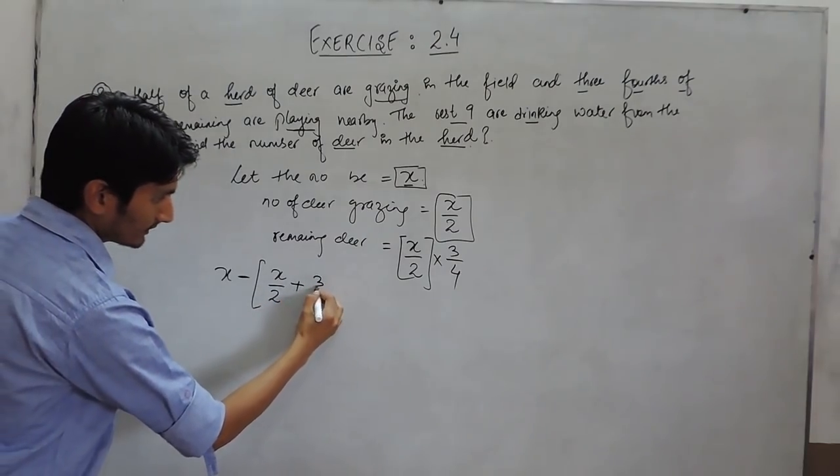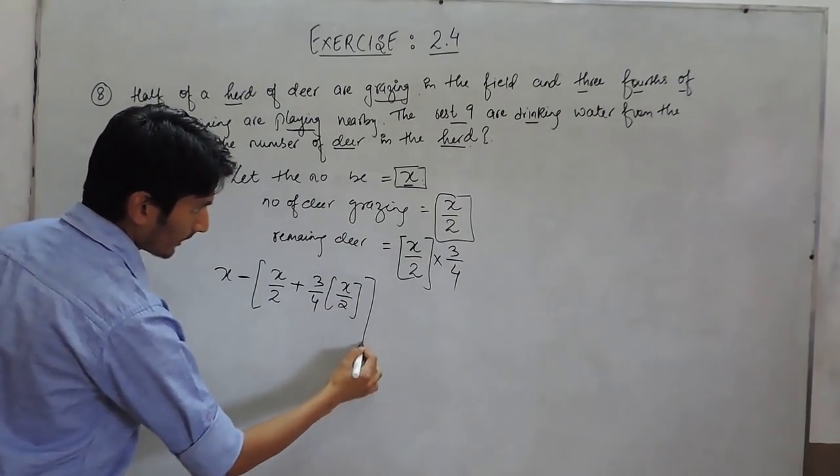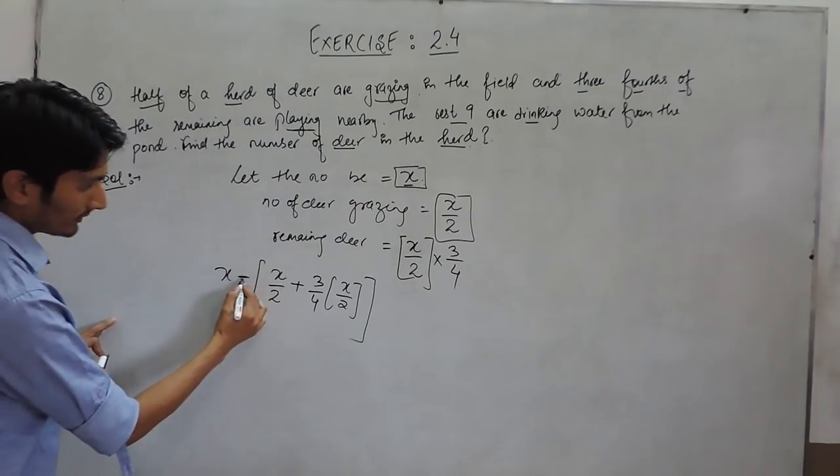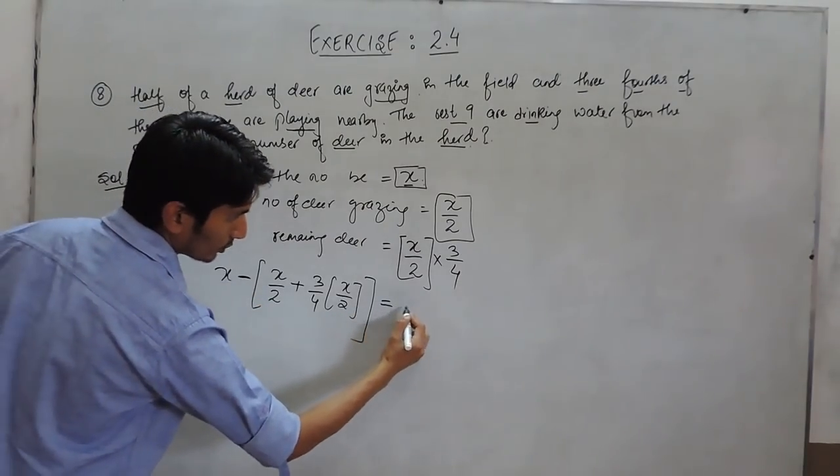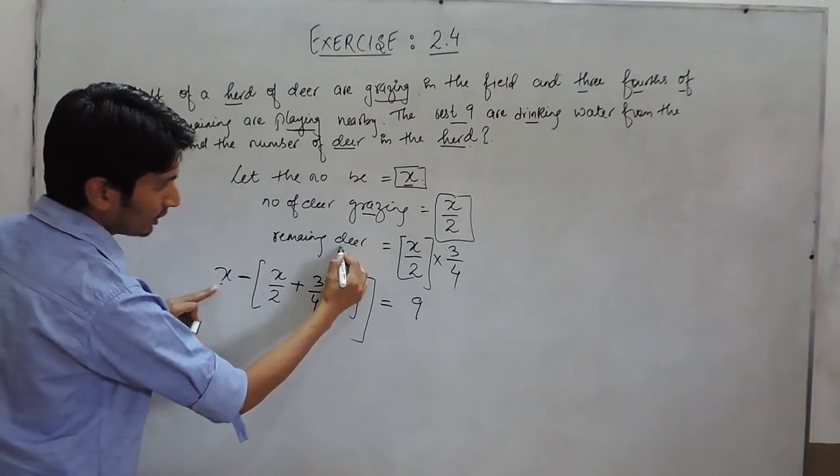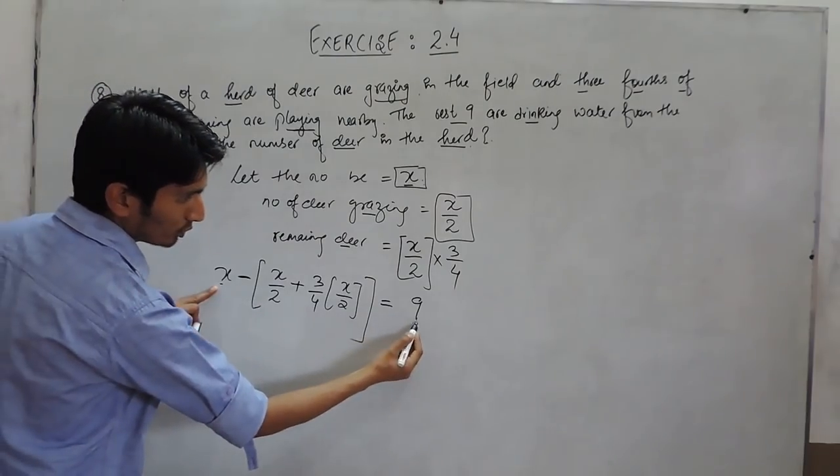And 3/4th of x/2 are playing nearby, so the remaining must be equal to 9. Total number minus the deer which are grazing and those are playing should be equal to 9.